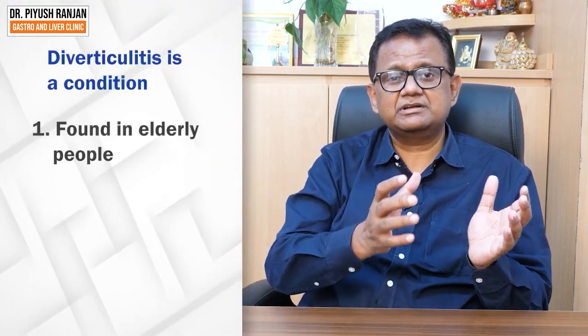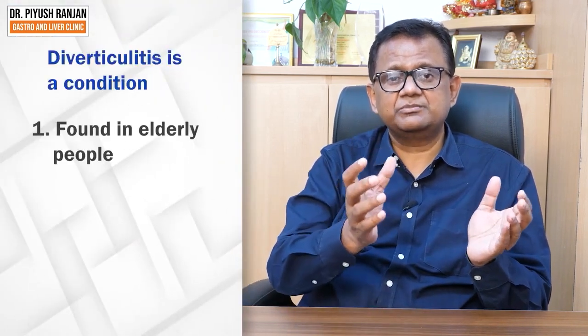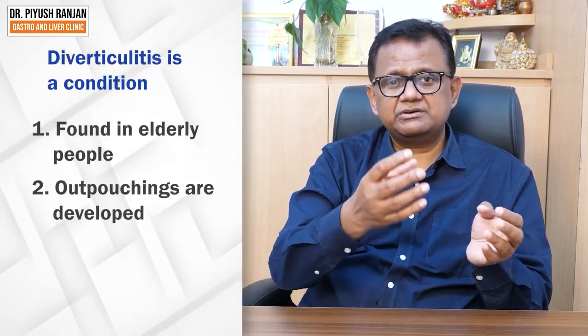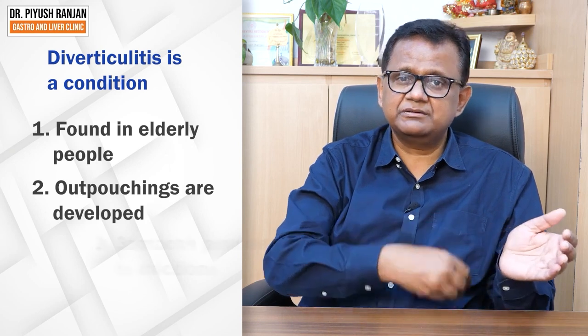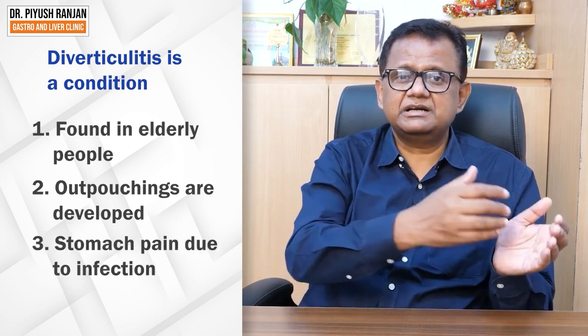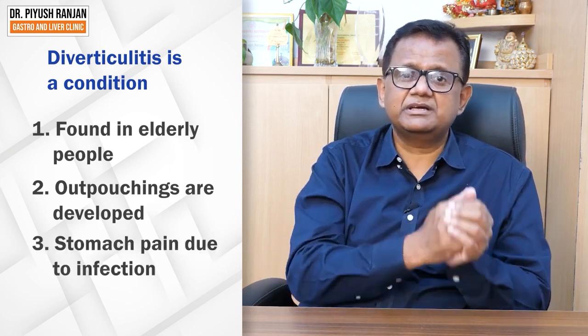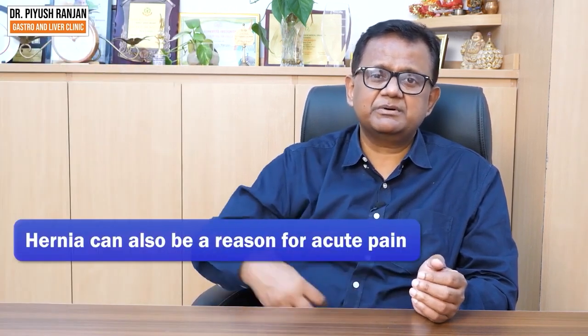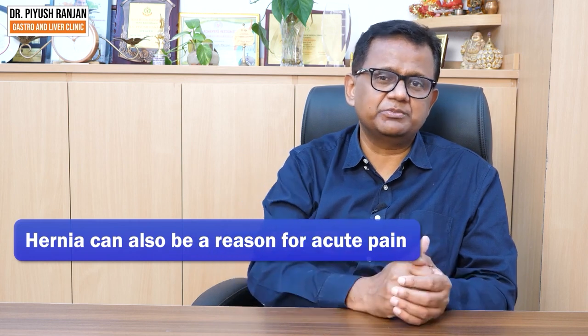Diverticulitis is another cause. Generally in elderly people, out-pouching forms in the bowel called diverticula, which can become inflamed and cause pain. This is an important cause of acute abdominal pain. Additionally, a hernia — particularly an inguinal hernia — can also cause acute pain.